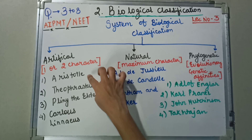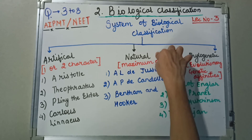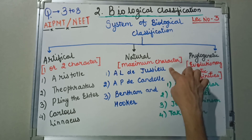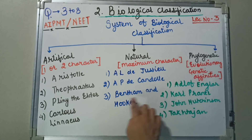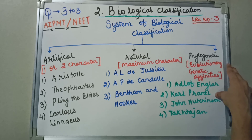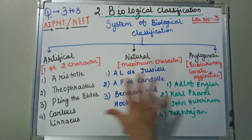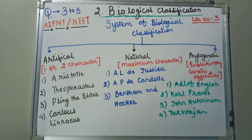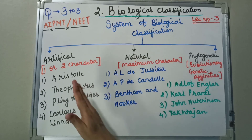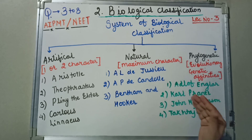Under artificial classification the scientists are Aristotle, Theophrastus, Pliny the Elder, and Carolus Linnaeus. Natural system of classification: A.L. de Jussieu, A.P. de Candolle, Bentham and Hooker. For phylogenetic classification: Adolf Engler, Carl Prantl, John Hutchinson, and Takhtajan. These are the scientists who worked for the classification of each section.